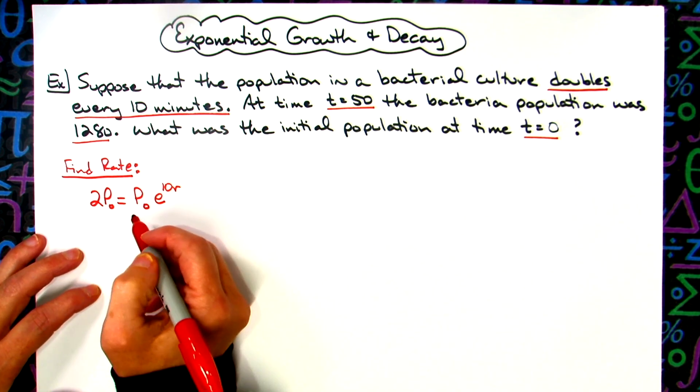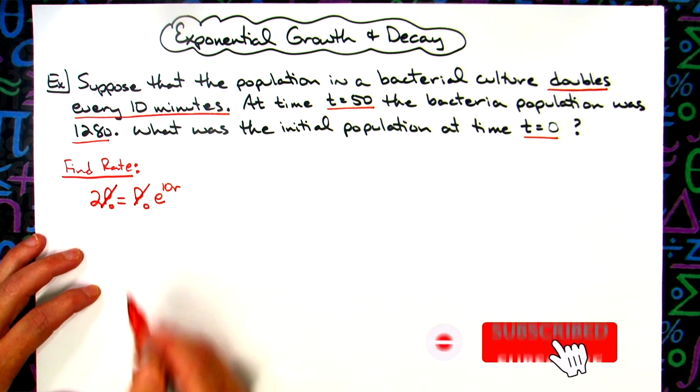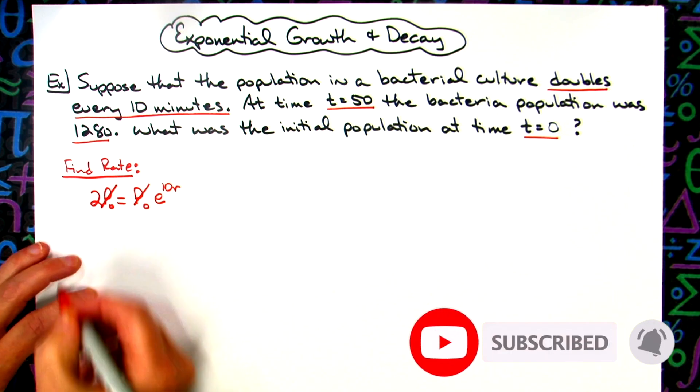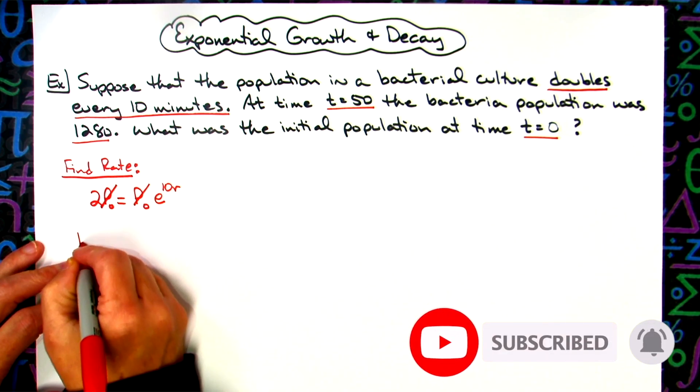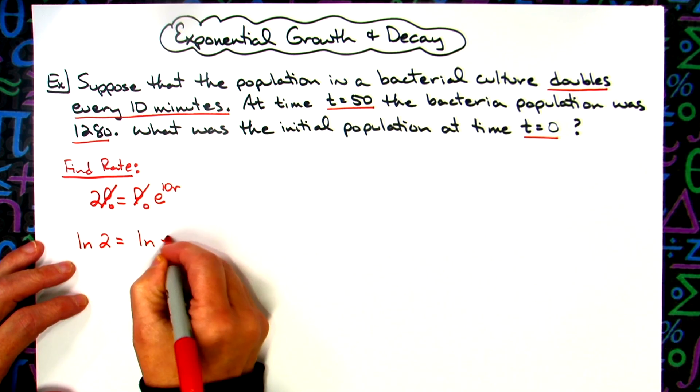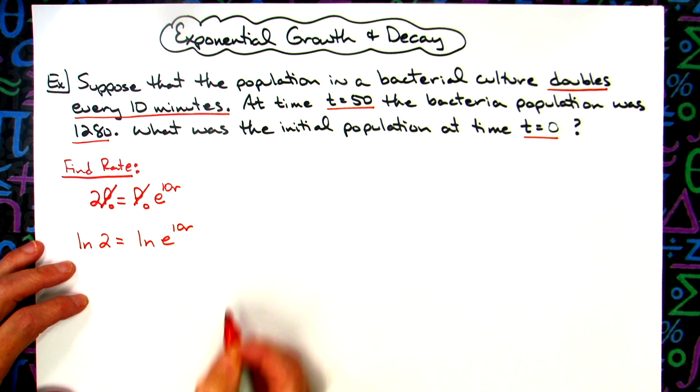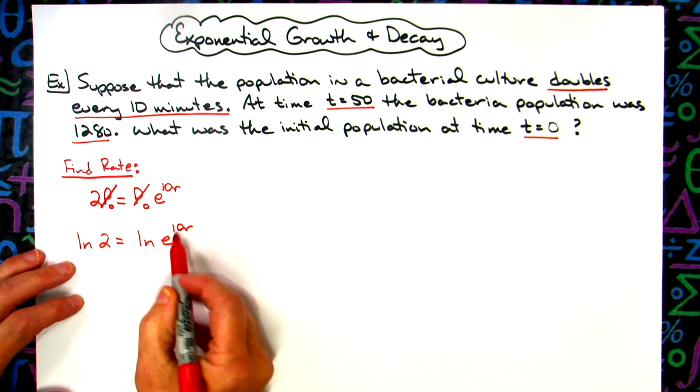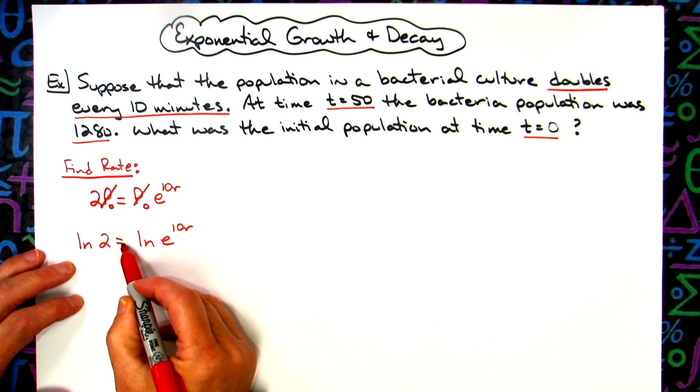Now from here we can just cross off both P's from both sides of the equation and take the natural log of both sides because this is an exponential equation. So I'm going to have natural log of 2, natural log of e raised to the 10r. Now a lot of different ways here you can think of this. You can bring this down in front.